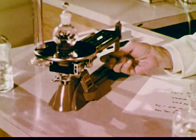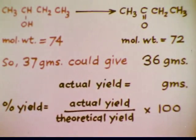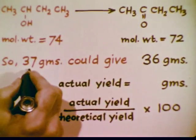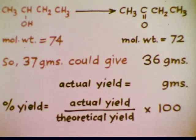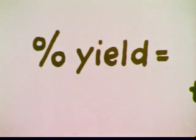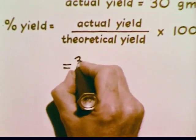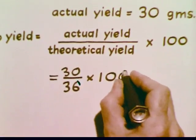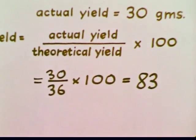The flask is weighed to determine how much ketone has been obtained. The actual yield of our ketone is 30 grams. The oxidation of one mole of alcohol — 74 grams — will yield one mole of ketone, 72 grams. Therefore, 37 grams of alcohol could have given a maximum of 36 grams of ketone. The actual yield of 30 grams divided by the theoretical yield of 36 grams gives us 83 percent — the percentage yield.